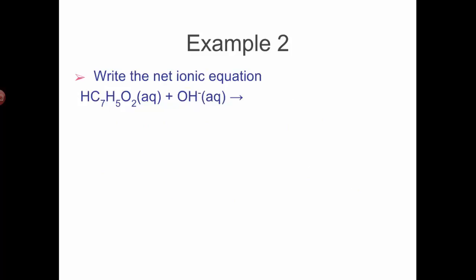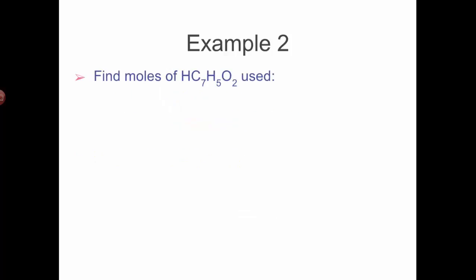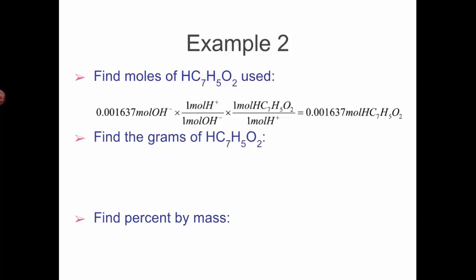First, write the net ionic equation. It's just the benzoic acid that reacts with hydroxide to give water and the benzoate ion (C7H5O2-). It's one to one - a one to one mole ratio. Find the moles of hydroxide used - volume in liters times molarity, then one mole of hydroxide per mole of sodium hydroxide gives us 0.001637 moles of hydroxide used. Since it's a one to one mole ratio of hydroxide to the acid, I have the same number of moles of the acid.